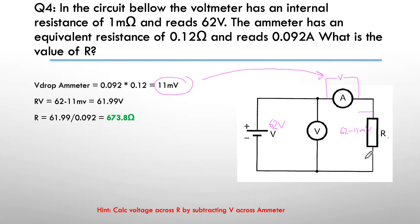I know the current through the resistor because I was told the current up here, and I now know the voltage across the resistor. So R equals 61.99 divided by 0.092.